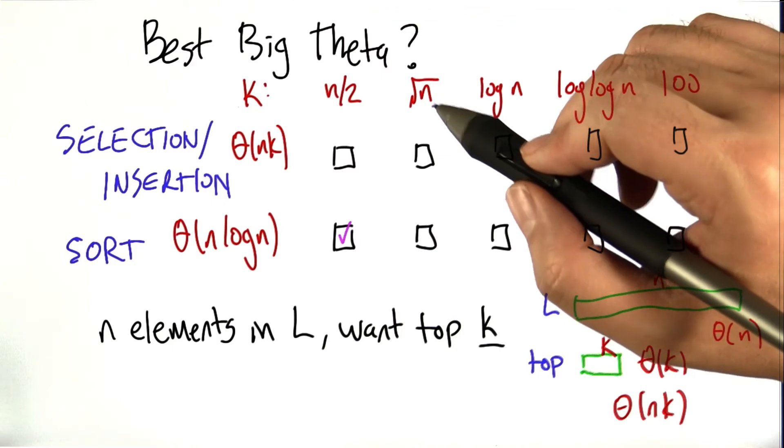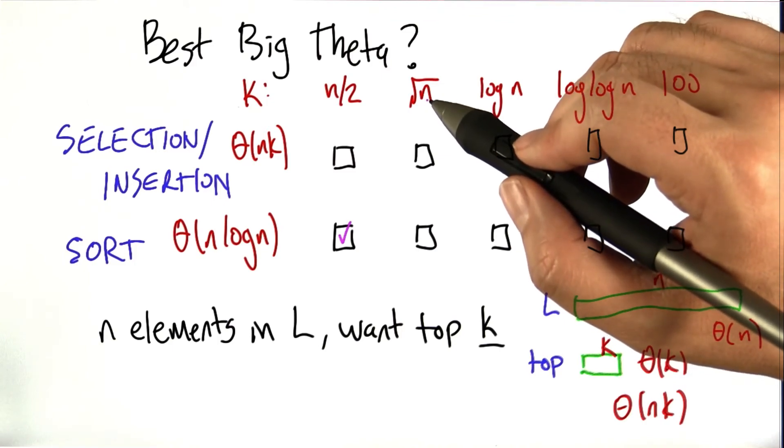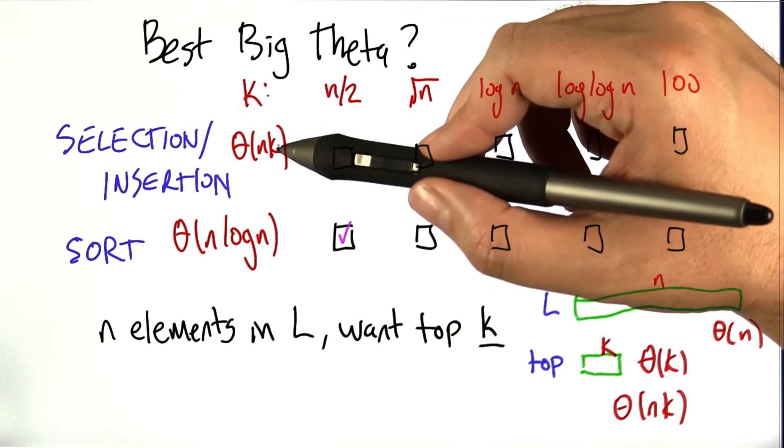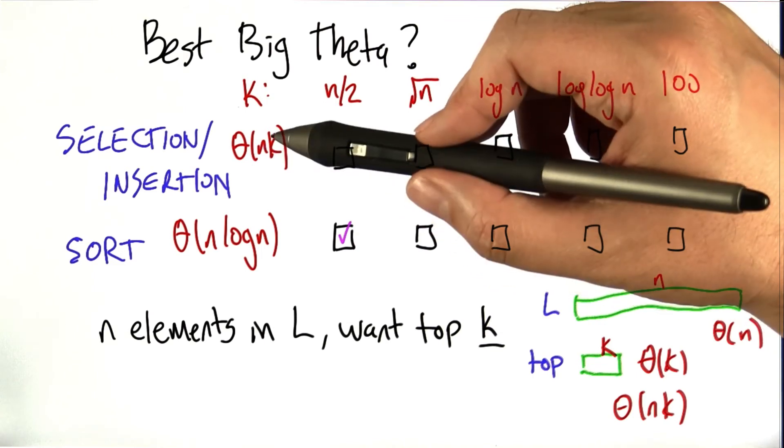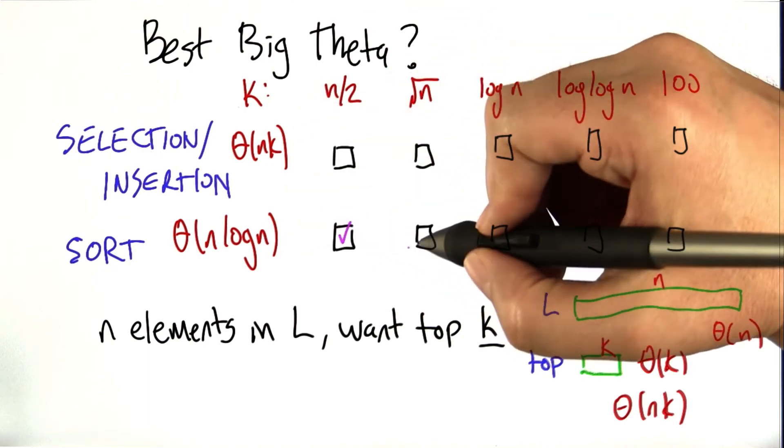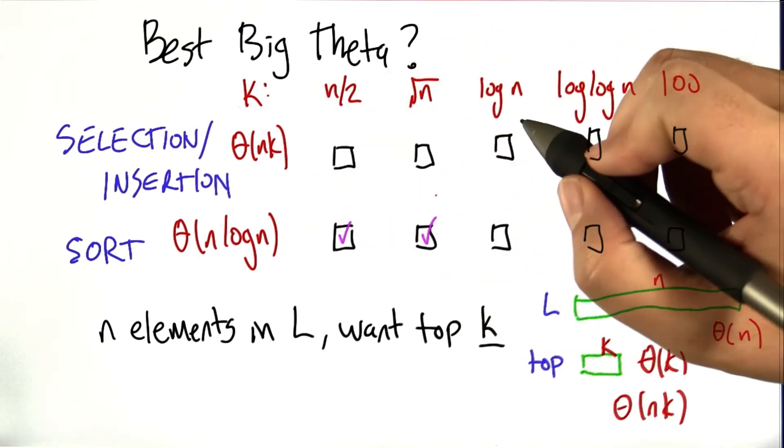Square root of n, what happens with square root of n? We're comparing n log n to n times the square root of n, which is n to the 3 halves. n to the 3 halves is asymptotically larger than n log n, so we're still better off just sorting the whole list.